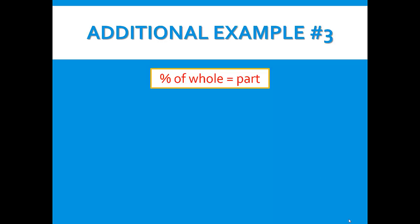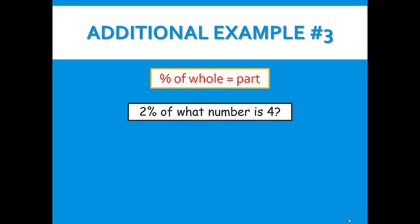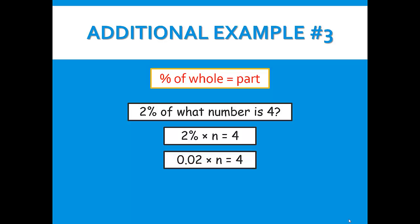Now we have our third additional example. We're trying to find 2% of what number is 4. We have 2% times n equals 4. 2% as a decimal is 2 hundredths. So we have 0.02 times n equals 4. We'll divide both sides by 0.02, so we get n equals 4 divided by 0.02. Now we can divide.